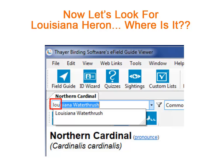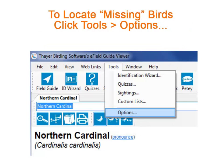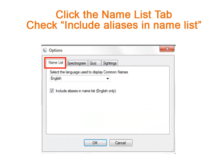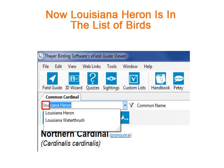All we need to type is L-O-U. But it's not there! If you think you know a bird's name and it's really not there, try this. Click Tools and then Options. Now just click on the Name List tab and check the box where it says Include Aliases in Name List. Click OK when you're done. Now when we go back and type L-O-U, the Louisiana Heron does appear.